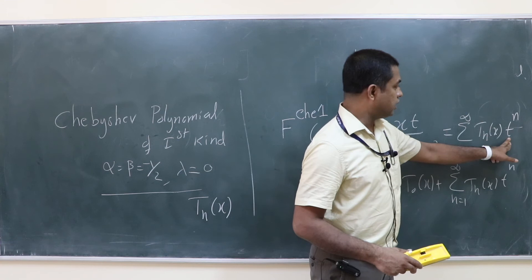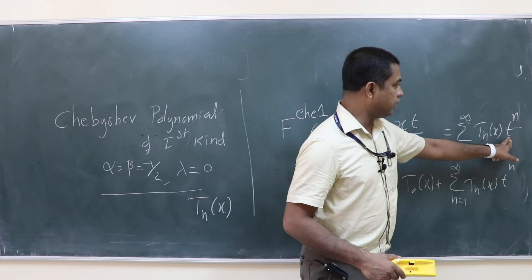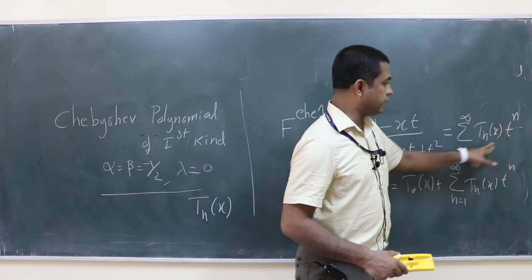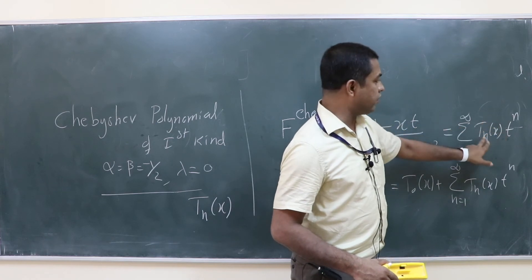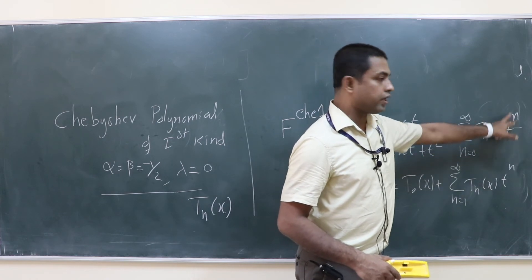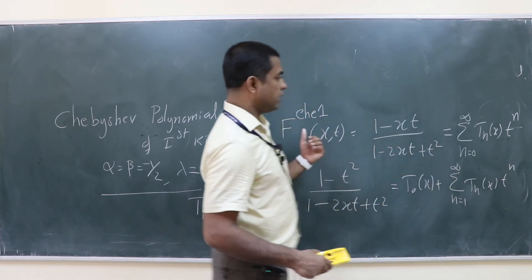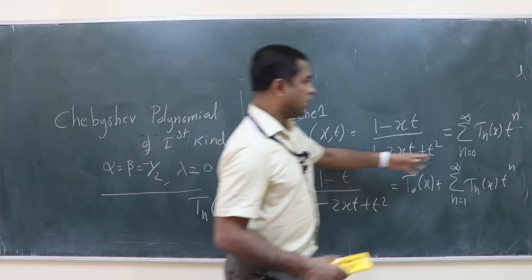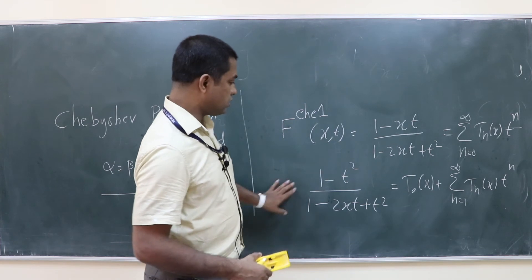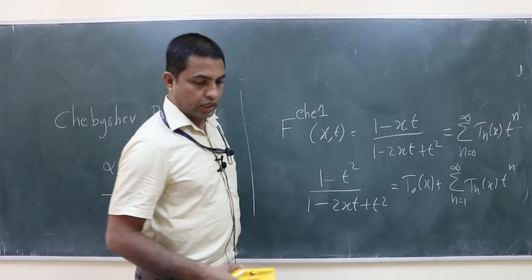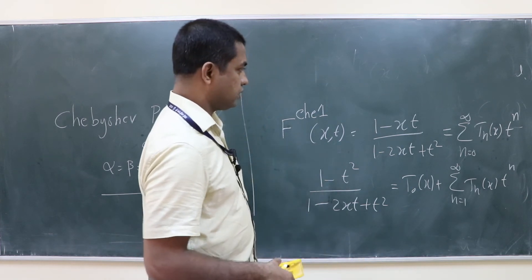The generating function is written as a function of x and t, because it is the series expansion using the polynomial T_n(x) with coefficient t^n — it is a power series in t whose coefficients are the polynomials. Similarly, for the Hermite polynomial case, we had Σ H_n(x) t^n / n!.